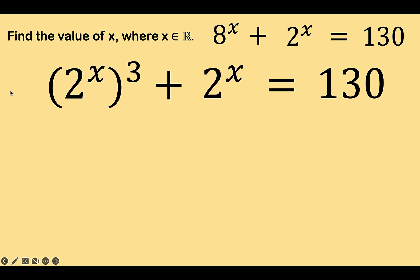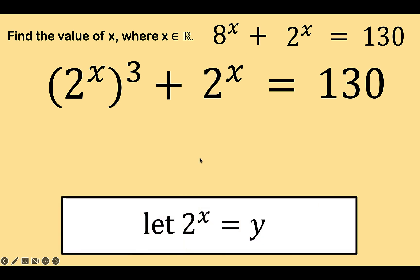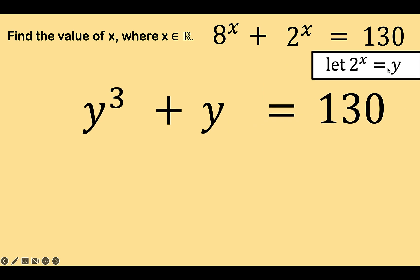Now, notice that the base here is 2 raised to x. The exponent is 3. You can also think of this 2 raised to x as a base with an exponent of 1. And therefore, it would be simpler if we let 2 raised to x be equal to a certain variable. And let's use the variable y for this purpose. So, if 2 raised to x is y, we can now replace by y this 2 raised to x to have y cubed, and do the same thing for 2 raised to x here, and then copy all the rest. Then, let's recall this value because we are going to use this later on.